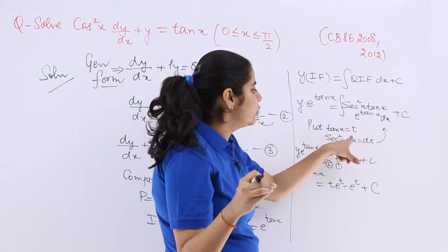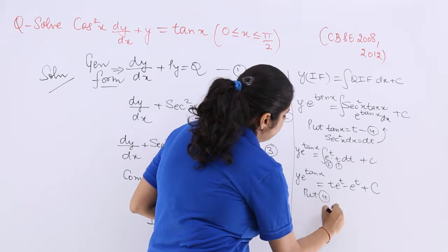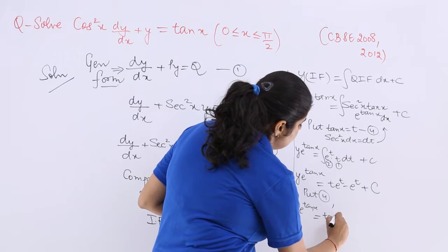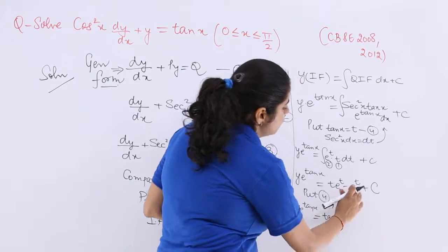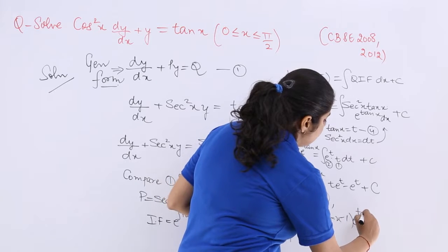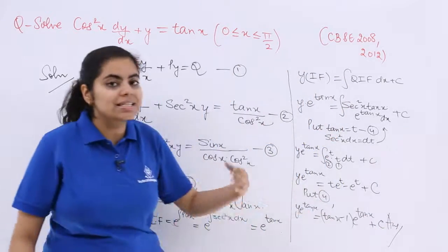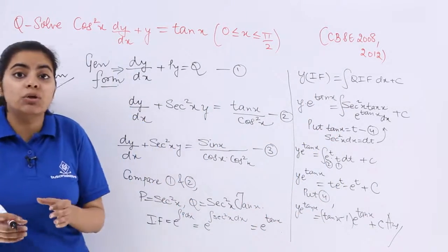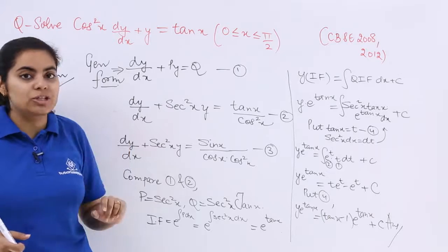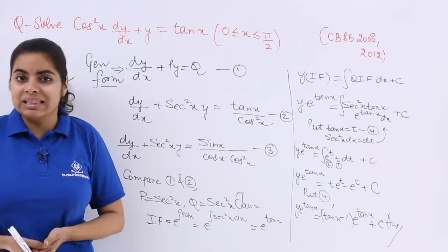The last step is to substitute back t = tan x. So y · e^(tan x) = tan x · e^(tan x) − e^(tan x) + C, which simplifies to y · e^(tan x) = (tan x − 1) · e^(tan x) + C. That is the final answer, where C is the constant of integration. Always remember: the general equation can only be compared with the given question if the format is acceptable; otherwise, you must manipulate the question first.